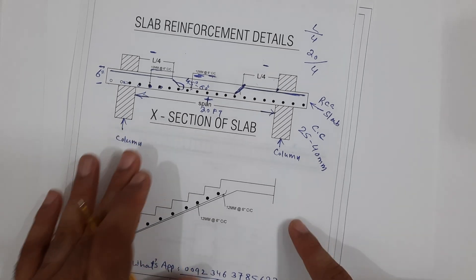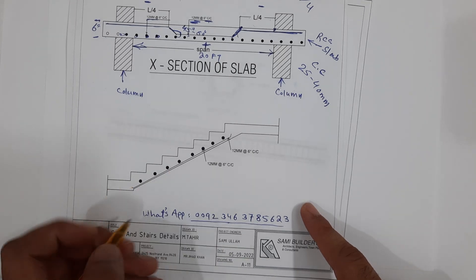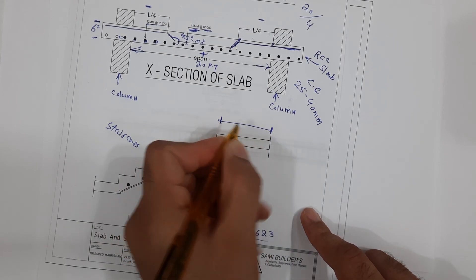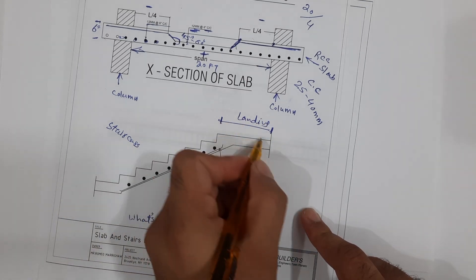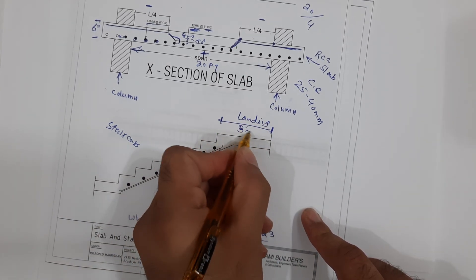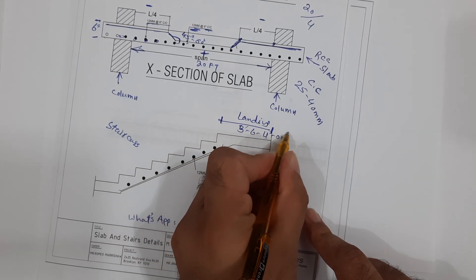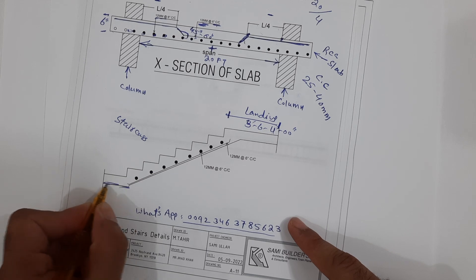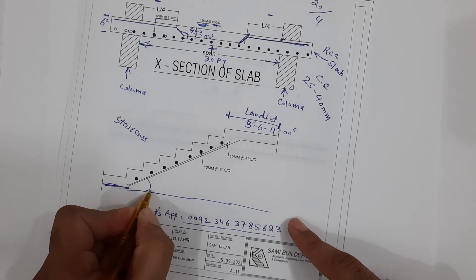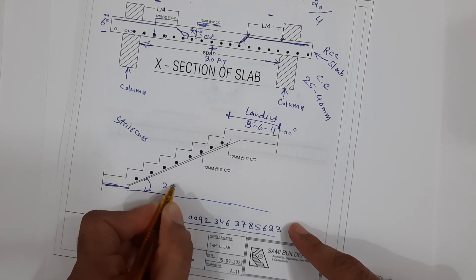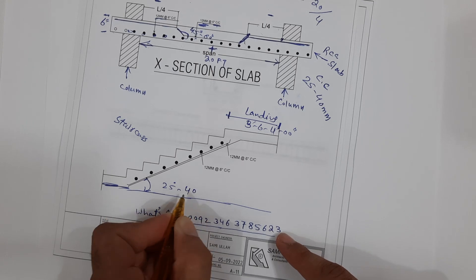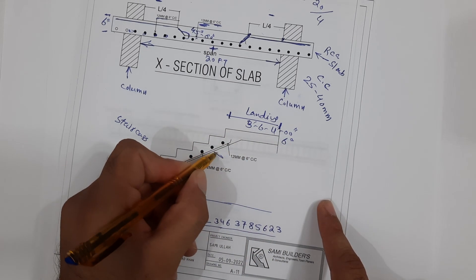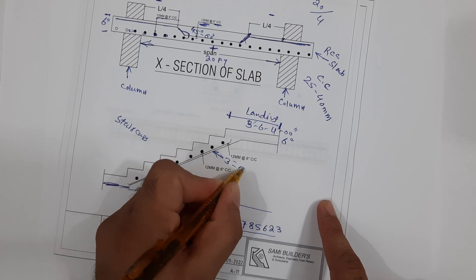Next, you can see the staircase. Here is the landing — you can keep the landing from 3 feet 6 inches up to 4 or 5 feet, depending on the design or architectural drawing requirements. The angle of the stair you can keep up to 25 to 40 degrees. The thickness is about six inches for this landing, and the pitch is up to three to six inches — you can keep five inches.